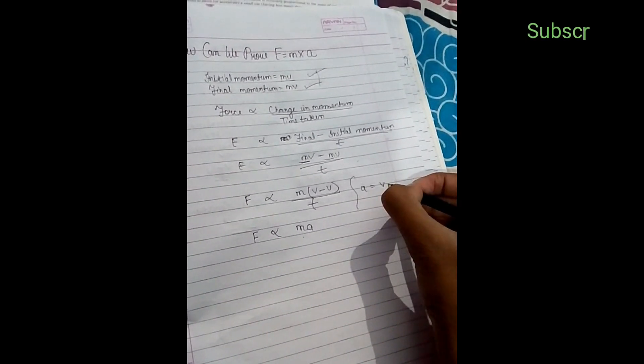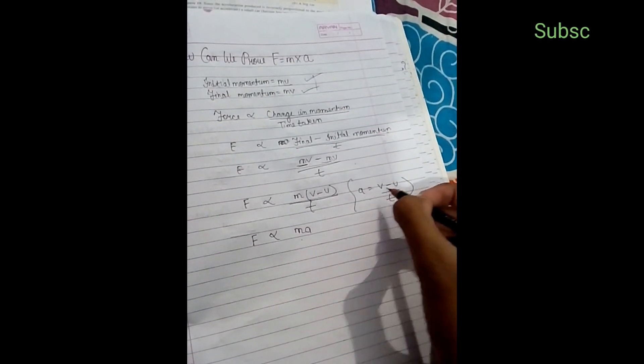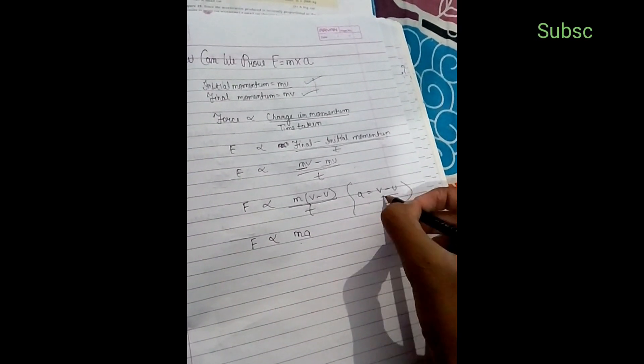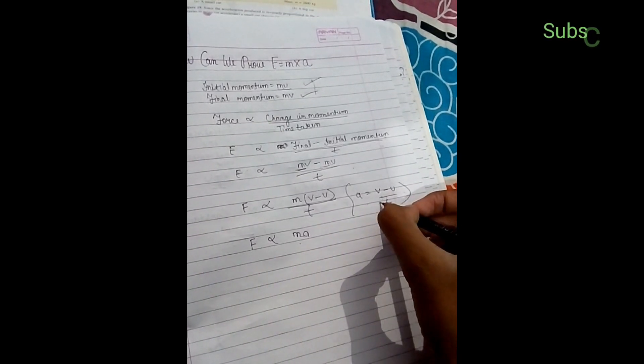We rewrite this because a equals v minus u by t, which is acceleration equals final velocity minus initial velocity by time taken.